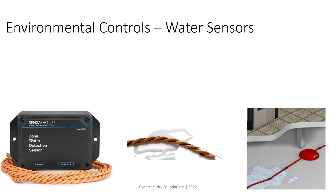Placing the data center on the top floor of the building is not recommended. It makes the data center subject to many issues: rain and water that could leak if the ceiling is not properly insulated, and fire — since flames rise upward, a fire starting on a lower floor can more easily reach the data center on the top floor.